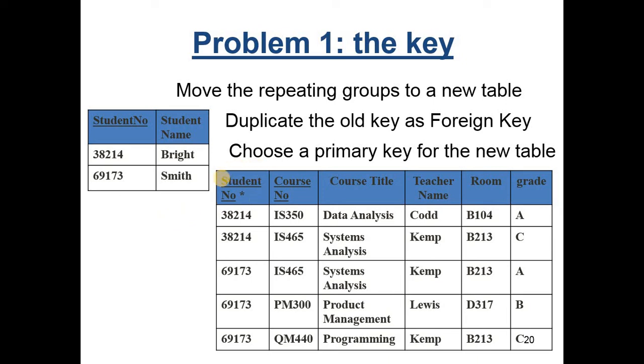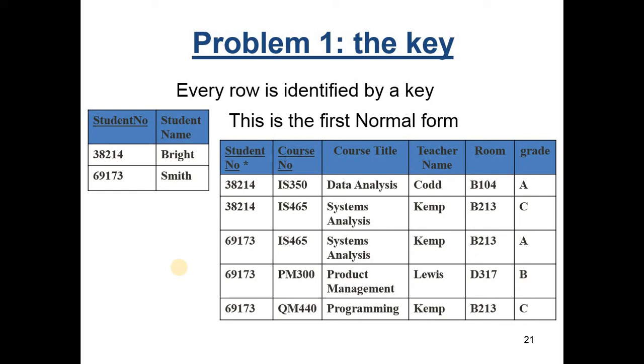Most of the time it's going to be a compound. Here I need to know both student number and course number. Here is something where I've got the same course number but a different student number. And if I didn't have that information, then I wouldn't have a key to identify the grade. So we have solved the problem of having a primary key for every data item. Our data is in what we call first normal form, that is there's a primary key for everything.